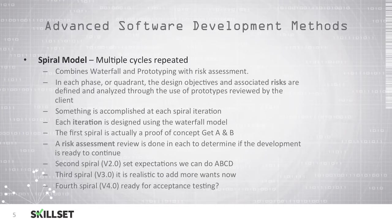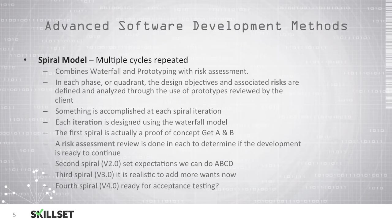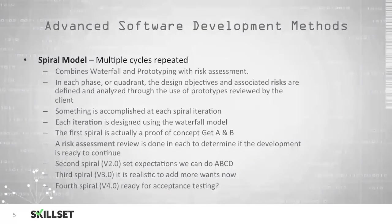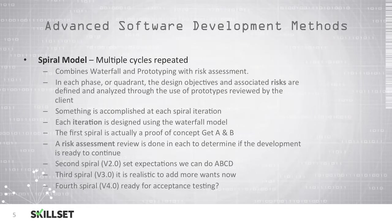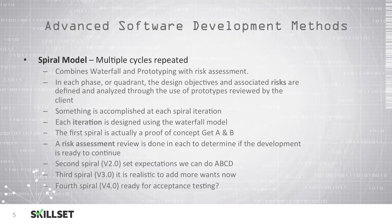During the second spiral, or version 2, you'll set the expectations and let the customer know that you can do A, B, C, and D. In the third spiral, version 3, you'll add more of the customer's wants and desires into the program. And during the fourth spiral, or version 4, you'll determine if the application is ready for acceptance testing. For the CISSP examination, you should remember that the spiral model has multiple repeated cycles and is a combination of the waterfall and prototyping model with a risk assessment.